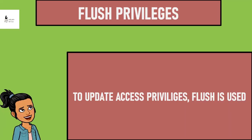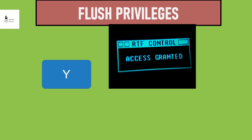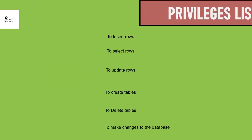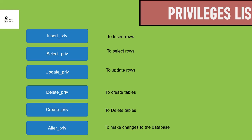Flush privileges: every time we use this command, the access privileges of the database will get updated. If the value of the access privileges is given as Y, which means yes, then access is granted to change that data. If it is given as N, which means no, data access is denied. Privileges could be set for selecting a row, inserting a row, updating a row, deleting rows, creating tables, and making changes to the database structure.